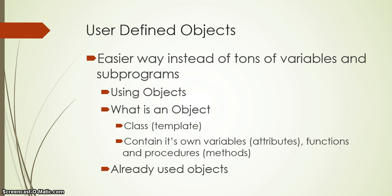You might not have realized that you've already used objects before. In fact, in your very first program when you dragged something onto your form — like a button — that button was actually an object already designed for you in Delphi. You were changing the button's name, its caption, maybe its height or width property — those are all the button object's attributes. And when the button got clicked, those events triggered functions and procedures — the methods of that object.